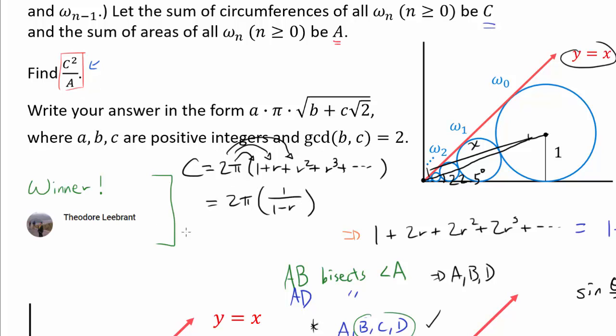And in the same way, our area is going to be π times (1² + R² + R⁴ + R⁶ and so on). So that's going to be π times 1 over (1 minus R²). In this case, the common ratio is R².